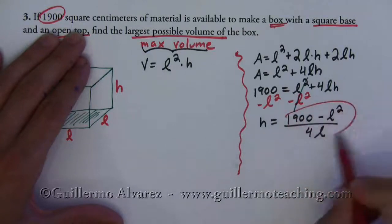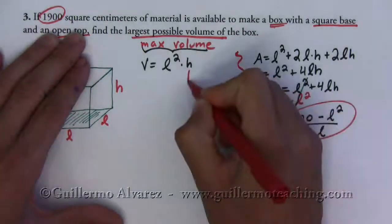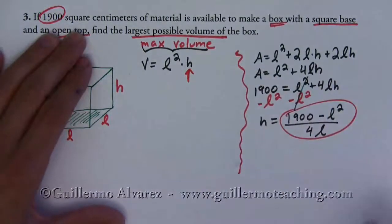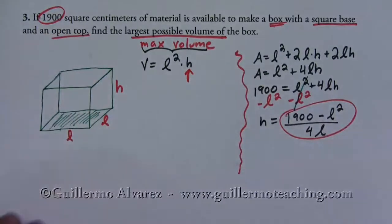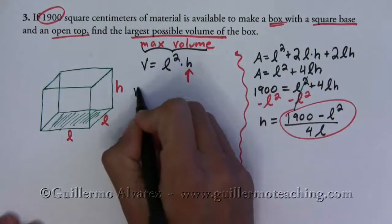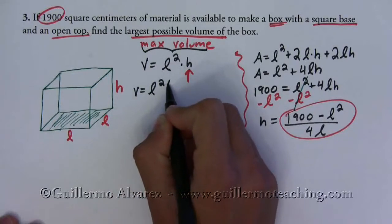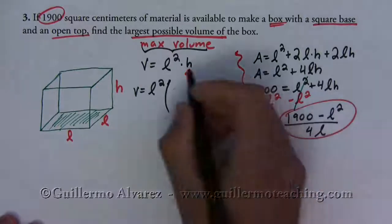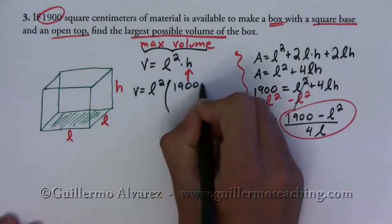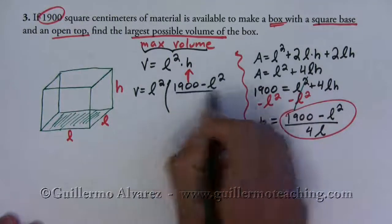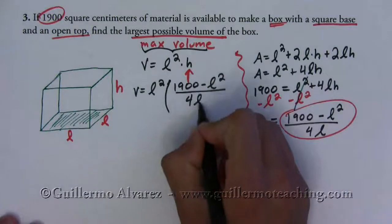And this we can go ahead and plug it into this guy, and that'll give us a formula for the volume with just one variable. So let's plug that in. So we're going to have volume equals l times 1900 minus l squared over 4 l.